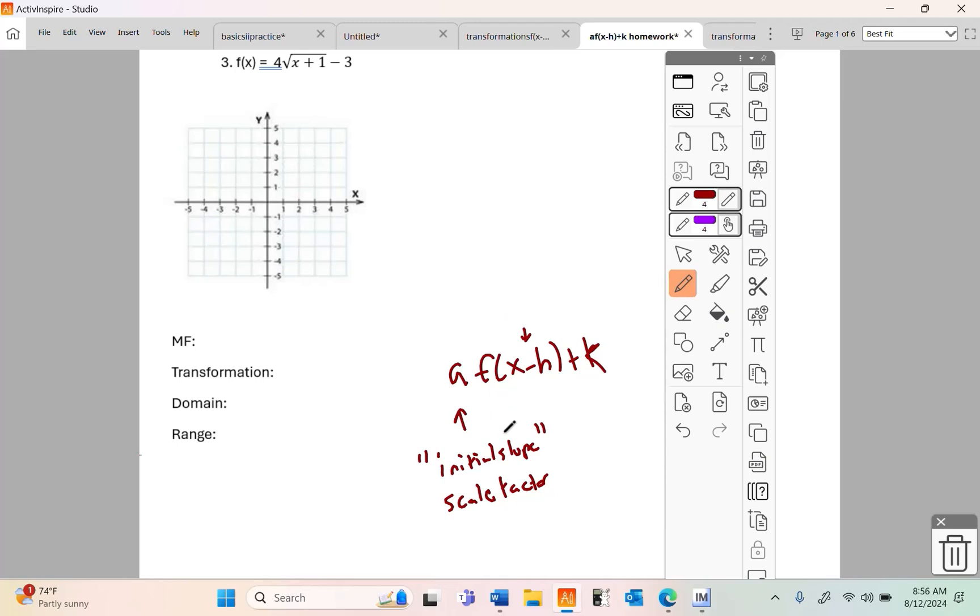The h here is going to be your horizontal shift, and it is opposite of the sign, and then the k is your vertical shift, and you just take it for what it is. So I'm going to go ahead and talk about the transformations here. I have a scale factor of four. There's a four out front.